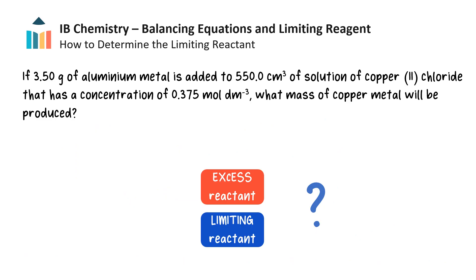Often it is not clearly stated which reactant is limiting, as in the previous problem. Most of the time, amounts of each of the reactants are given and it is up to you to determine which reactant is limiting, and will therefore determine the theoretical yield. Let's use the same reaction as in our previous problem, but note the difference in the wording here. If 3.50 grams of aluminium metal is added to 550.0 cm³ of a solution of copper chloride that has a concentration of 0.375 moles per decimetre cubed, what mass of copper metal will be produced? Note that it is no longer clear that aluminium is the limiting reactant. Amounts of both aluminium and copper chloride are given — which will be used up first and is therefore the limiting reactant?